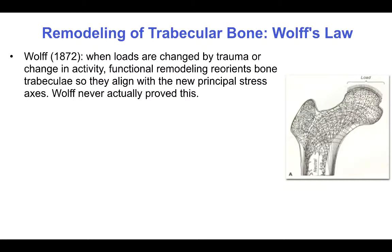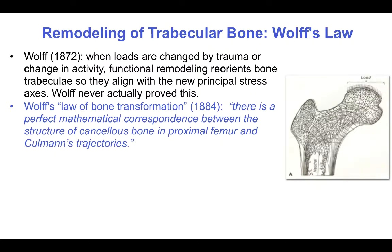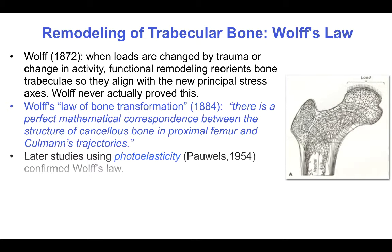Although he never formally proved this, it didn't stop him from stating his law of bone transformation in 1884 that there is a perfect mathematical correspondence between the structure of cancellous bone in proximal femur and Cullmann's trajectories.